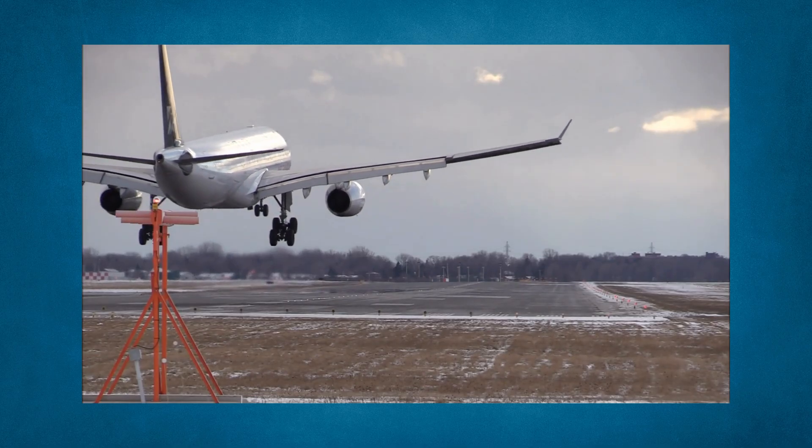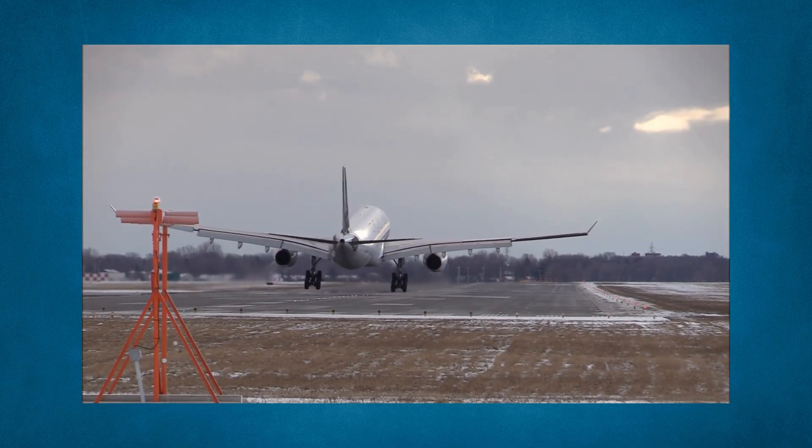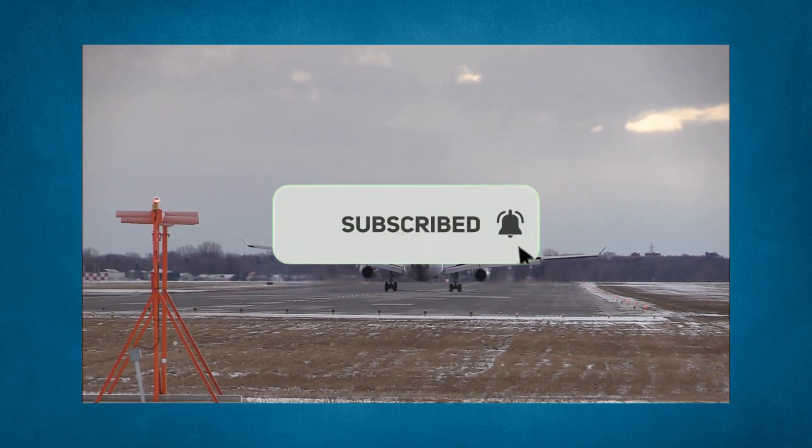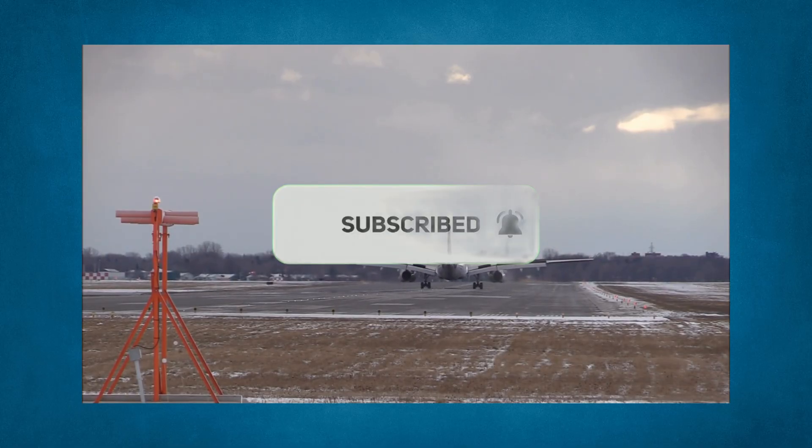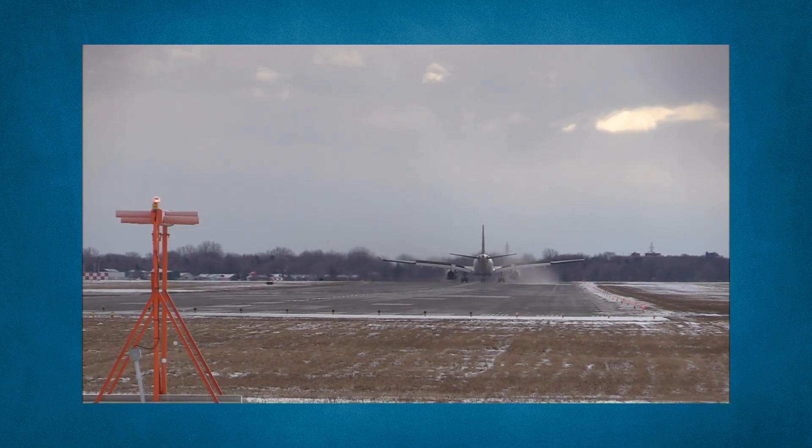So, what is the coffin corner? It's the narrow window at high altitudes where an aircraft's stall speed and its maximum Mach number, MMO, get dangerously close. Go too slow, and you stall. Go too fast, and you risk exceeding critical Mach, leading to shock waves, pitch downs, and potentially losing control.